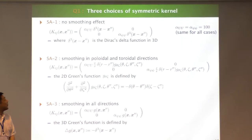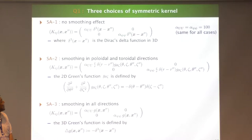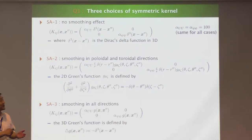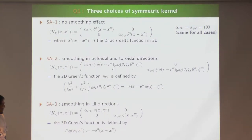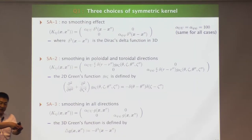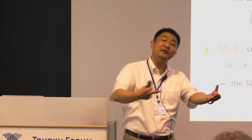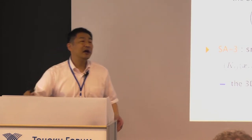To answer the first question, we tried three types of symmetric kernel. The first (SA1) has a delta function in the diagonal elements — the standard one where the Poisson bracket is just operated twice. The third type (SA3) has a smoothing effect in all three directions, with a Green's function for the three-dimensional system as a diagonal element. The second type (SA2) is mixed: smoothing in the theta direction but no smoothing in the radial direction. We then ran the simulated annealing from the same initial condition using all three kernels.